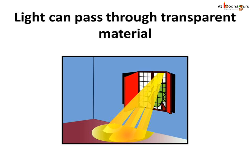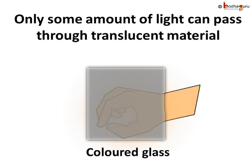A glass allows all the light to pass through it, and hence we can see through it clearly. Now you know why we can see through all the transparent materials. Translucent materials like a colored or frosted glass transmit only some amount of light — they allow only some amount of light to pass through them. So we can see through them partially, not clearly.